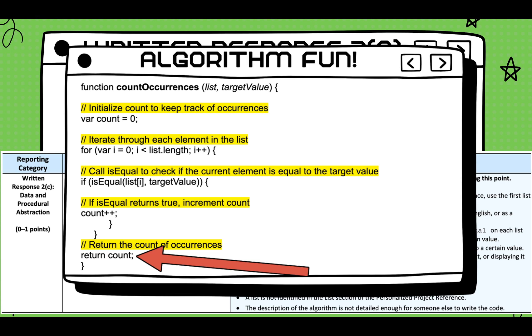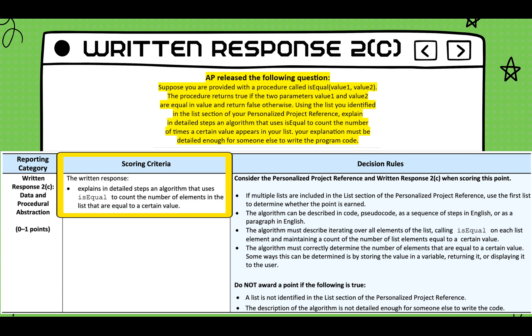This is code we've used numerous times throughout this class. Don't overthink it, kids. To earn a point for this row, AP is asking you to describe, in detail, how to write an isEqual algorithm. This algorithm needs to reference the list you submitted in your PPR. Your algorithm needs to compare your list against a hypothetical parameter. Your algorithm needs to count how many times this happens. And finally, return that number. At the core, this question is asking, how many times has something happened in your code, and return that number. Key to this question is applying the algorithm we just discussed to your code. Don't overthink this question.